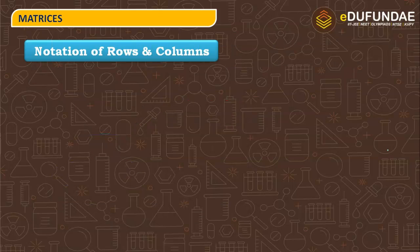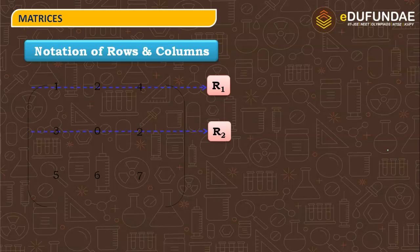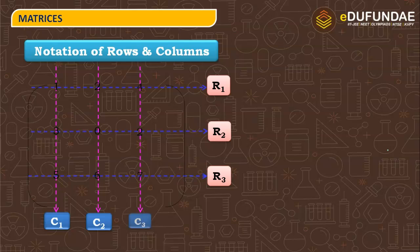Notations of rows and columns: the first horizontal line is R1 (row 1), the second horizontal line is R2 (row 2), and the third horizontal line is R3 (row 3). The vertical lines are called columns — the first vertical line is column 1, the second is column 2, and the third is column 3.